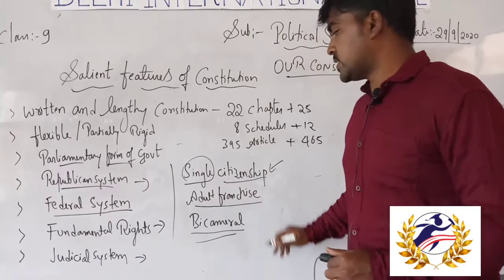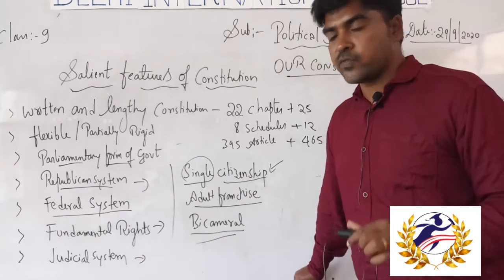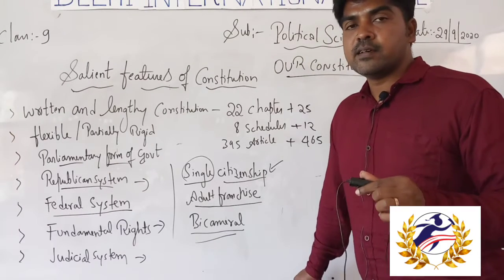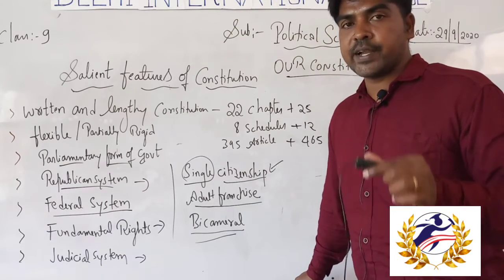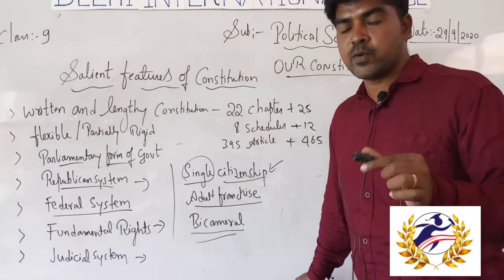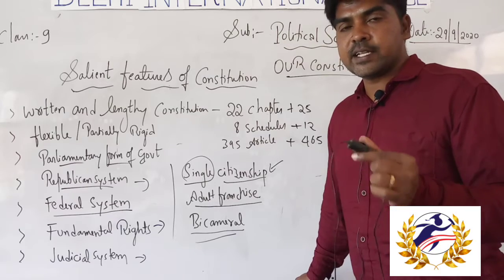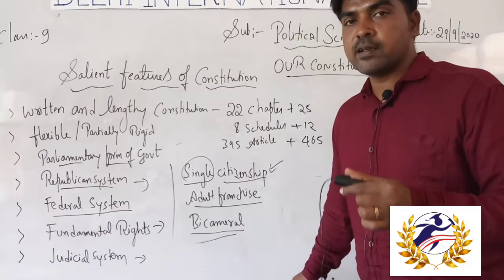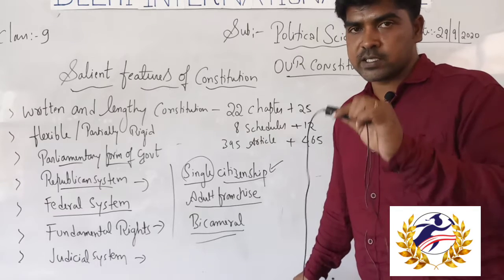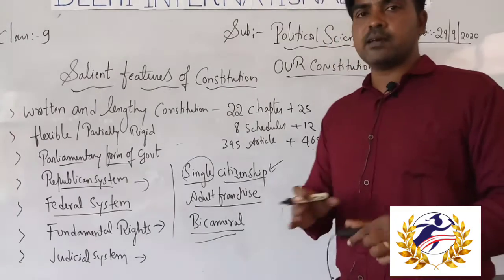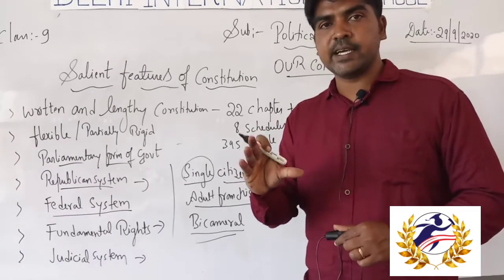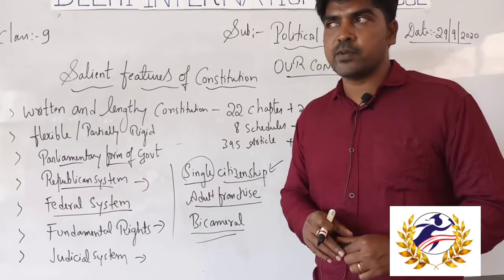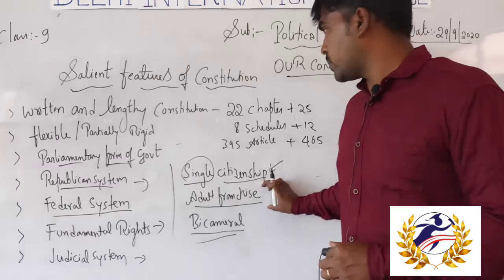Next is universal adult franchise. The age of 18 years is the threshold for certain rights — for example, the right to vote is not available to everyone; only a person who is 18 years or above is eligible to vote. Below that age a person is considered a minor. Once a person reaches 18, they become a major. This concept of universal adult franchise is also kept in our Indian Constitution.